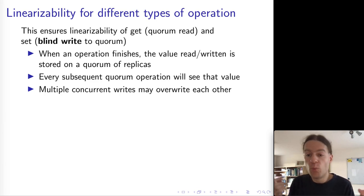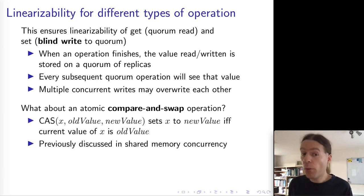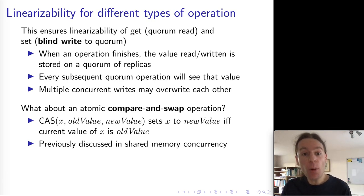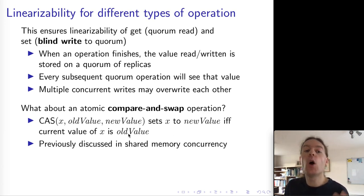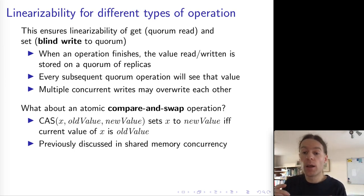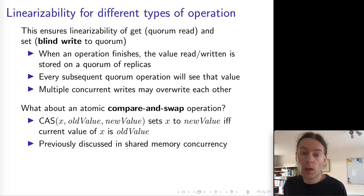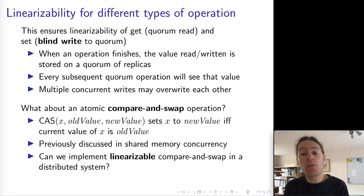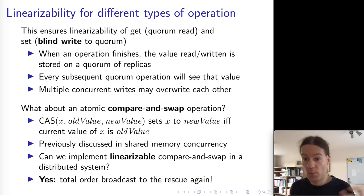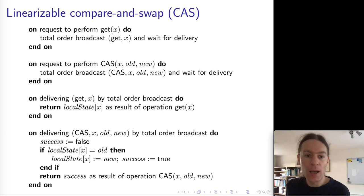However, if multiple clients concurrently write to the same object, they might overwrite each other, since there is no coordination between the writes. One thing you might also want is a compare-and-swap (CAS) operation — as seen in the first half of this course on concurrent systems. A CAS atomically sets a memory location to a new value only if its current value matches an expected old value, preventing races between concurrent threads. Can we implement a linearizable compare-and-swap in a distributed system? Yes — but we need a different algorithm: total order broadcast.